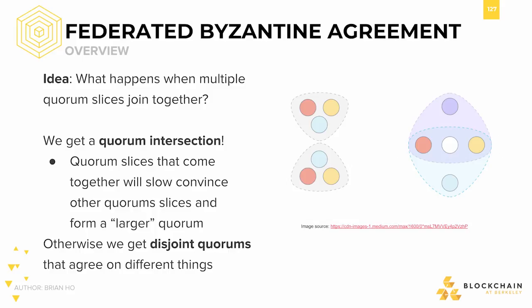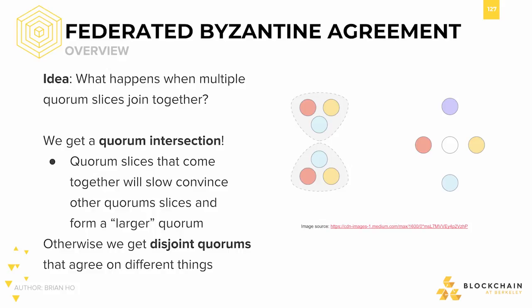This is where quorum intersections come in. By having overlapping sets of quorum slices, we can form a larger quorum and ensure consensus throughout the entire network. If all nodes share some individually selected trusted entities, then the whole network will still come to the same decisions without requiring a direct line of trust to any unknown node. You can trust popular entities with a lot of reputation, nodes which have been in the network for a while, or anyone else who you believe deserves the right to influence your decision making.